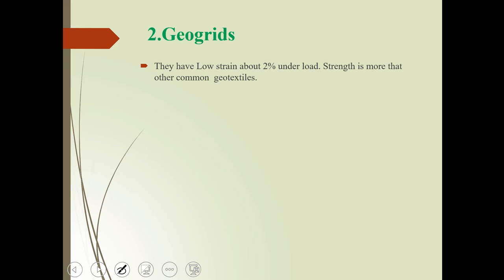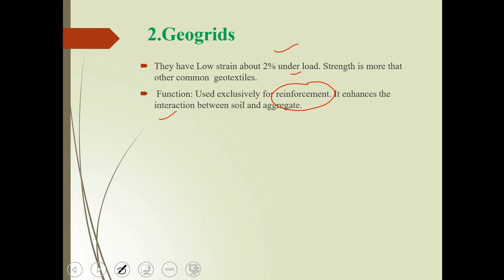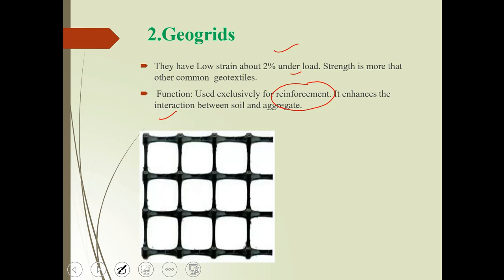Geogrids can be used as reinforcement and have about 2% low strain — their strength is greater compared to other common geotextiles. The main function of geogrids is reinforcement. We can use geogrids as reinforcement within the soil mass, and there is interaction between soil and aggregates.